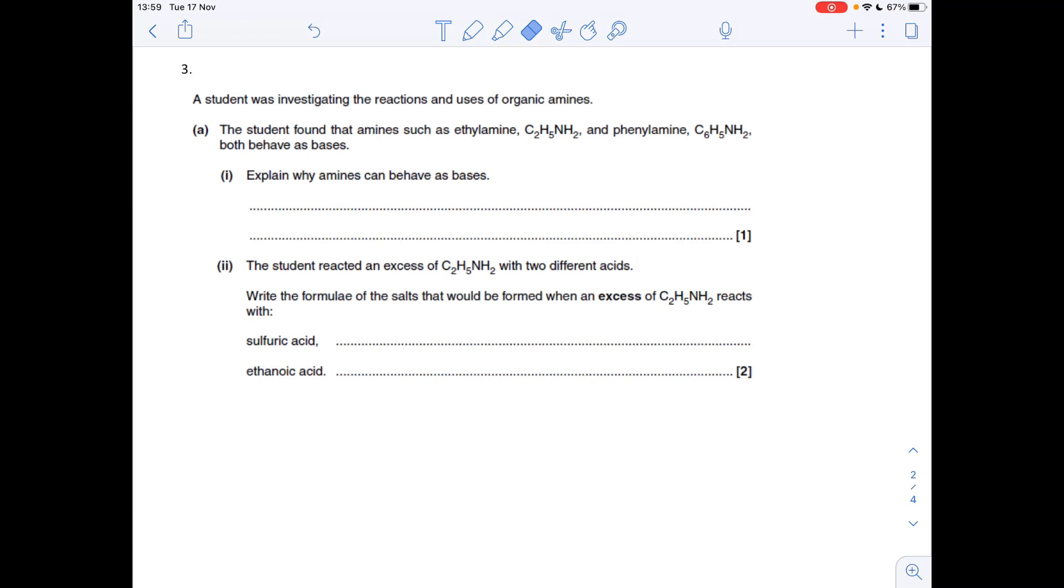Question three, explain why amines can behave as bases, and that's because the nitrogen on an amine has a lone pair of electrons, which can accept an H plus ion. It forms a dative covalent bond with the H plus ion, or you could call it a coordinate bond.